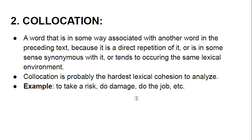Collocation is when a word is in some way associated with another word in the preceding text — either through direct repetition, synonymy, or by tending to occur in the same lexical environment. Collocation is probably the hardest type of lexical cohesion to analyze. Examples include: to take a risk, to damage, do the job, etc.